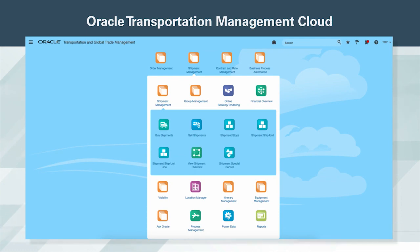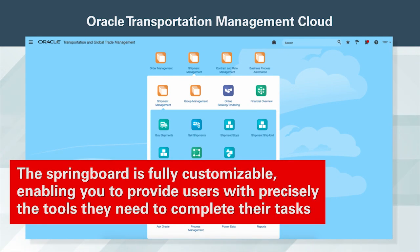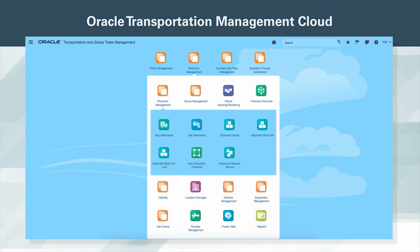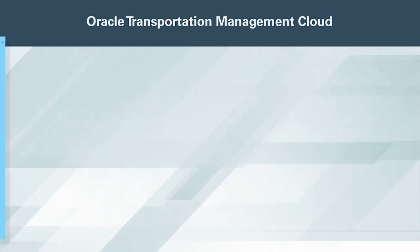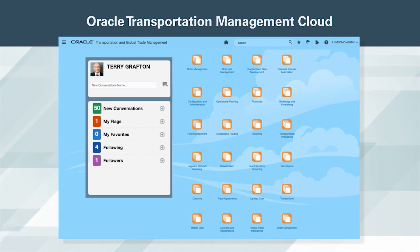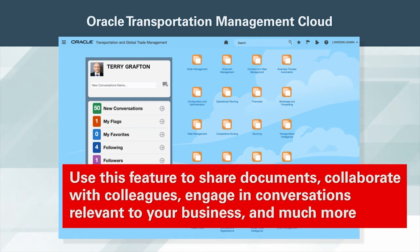Take advantage of the modernized, simple, and intuitive user experience of OTM. The springboard is fully customizable, enabling you to provide users with precisely the tools they need to complete their tasks. The OTM user experience aligns with other Oracle Cloud applications, providing a seamless experience across the entire platform. Social networking functions from Oracle Content and Experience Cloud have been embedded in the OTM springboard — use this feature to share documents, collaborate with colleagues, engage in conversations relevant to your business, and much more.